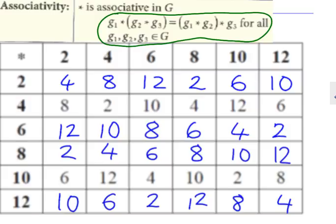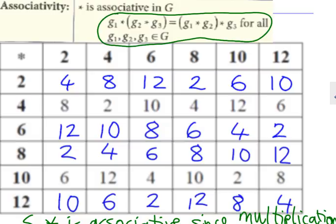So you can say S with the operation is associative since multiplication modulo n is. You're allowed to quote that, you don't have to prove it.